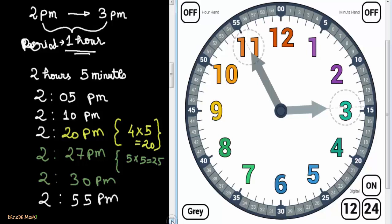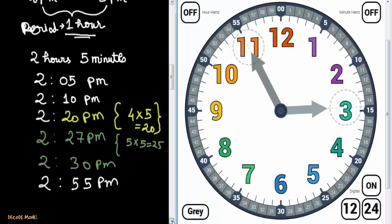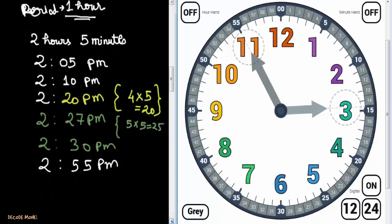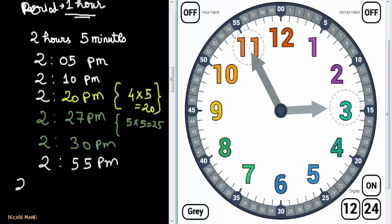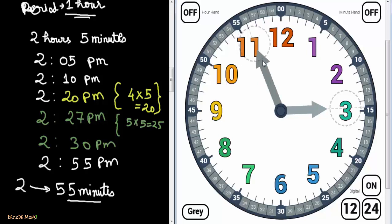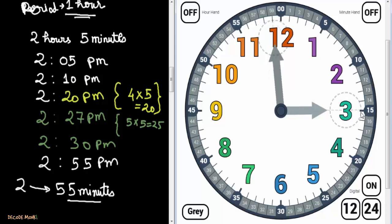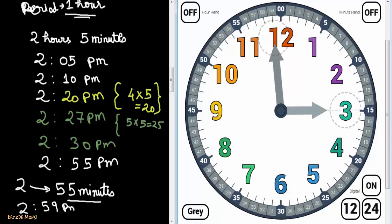Please pay attention: it's 2:55, meaning 55 minutes have passed after 2. Continuing to 2:56, 2:57, 2:58 — the hour hand is very near to 3 but still not 3. At 2:59 p.m., the hour hand is near to 3 but still not 3.